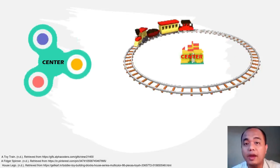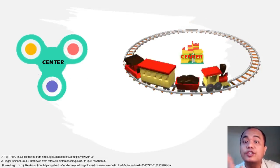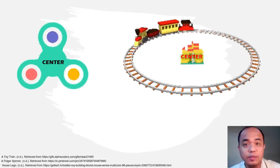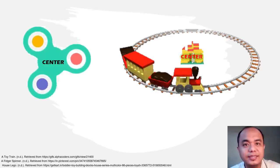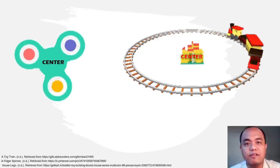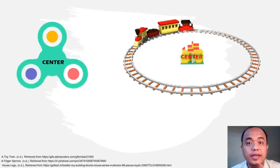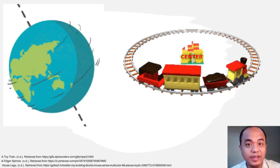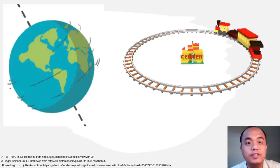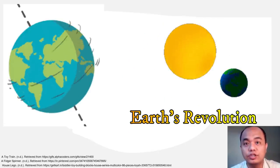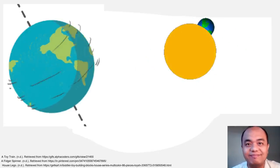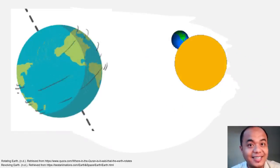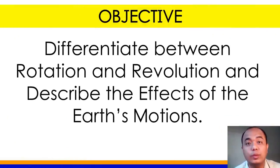How will you compare the movements of these toys to that of the Earth's movement? The movement of the fidget spinner is like the Earth's rotation. The movement of the toy train can be compared to the movement of our Earth — particularly, the Earth's revolution around the Sun. Would you like to know more about Earth's rotation and revolution? Our lesson for this week is to differentiate between rotation and revolution and describe the effects of the Earth's motion. Are you excited?